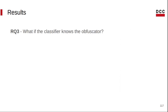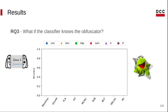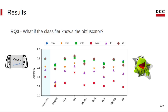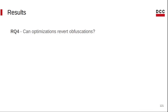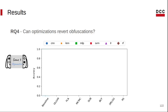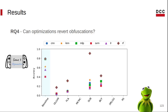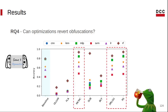Now, what happens if we give the classifier knowledge of the obfuscator? The classifier could use it during training. In this case, classification becomes much better — it's almost like game 0, our baseline. Except for OLLVM, which is still resistant to an obfuscation-aware classifier. And can optimization revert obfuscation? That's what we call game 3. Well, if the obfuscator is OLLVM, optimizations are not good at reverting the transformations. But if we use the other obfuscators, like those from previous work, then the optimizer totally reverts the transformations. We call these obfuscation techniques naive.